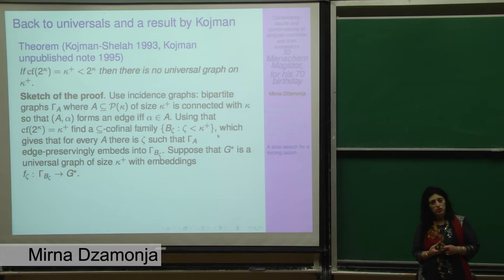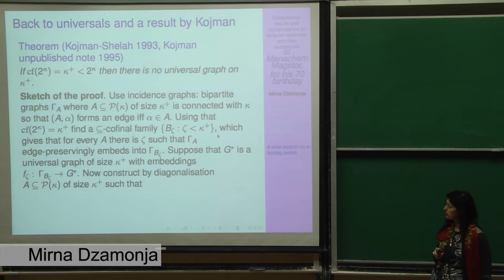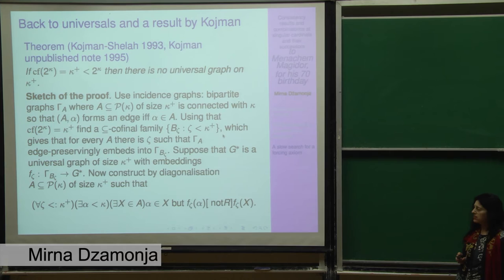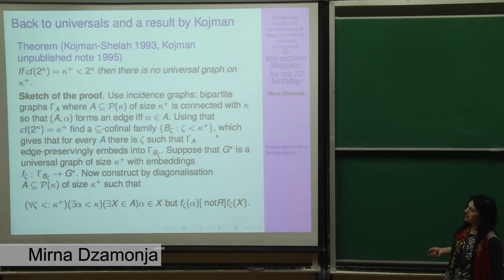And now using this fact that the cofinality of 2 to the kappa is equal to kappa plus, we can find the co-final family B_zeta, zeta less than kappa plus, in the family of subsets of kappa of size kappa plus. So what it means for it to be co-final is that the incidence graphs of these B_zeta actually dominate the incidence graphs of all the A's, means that for every A we can find the zeta such that gamma A is edge preservatively embedded into gamma B_zeta. So there are more edges in B_zeta than there are in gamma A. And now what we do is to suppose that there is a universal graph and we just look at the embeddings of those specific B_zetas. They're all of size kappa plus. And now we're going to diagonalize to make an A which will actually avoid them all. So construct by a diagonalization, a subset P of size kappa plus such that it obeys the following. For every zeta less than kappa plus, there is an alpha less than kappa and an x in this A such that alpha is in x, but f_zeta of alpha is not in relation with f_zeta of x. So this means that gamma A does not embed into gamma B_zeta or that gamma B_zeta does not embed into gamma star. Anyway, in any case, we get a contradiction. So it's a nice argument. As I said, it's much more general in the work, but that's what we wanted here.